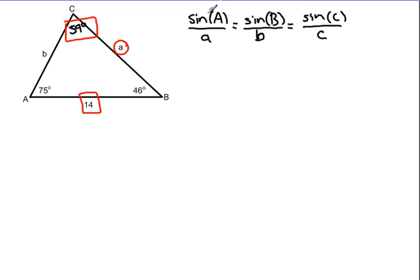So we can say the sine of angle A, so the sine of 75 degrees, over the length of side A, which we don't know, so we'll just write down A, is going to be equal to the sine of angle C, which we know now angle C is 59 degrees, over the side C, which we now know is 14.